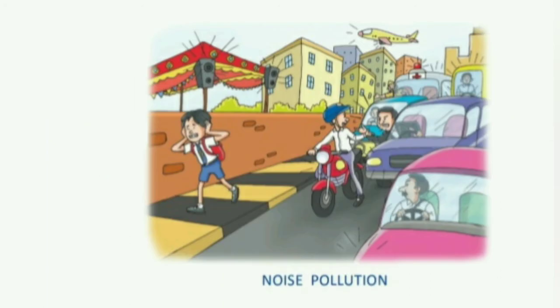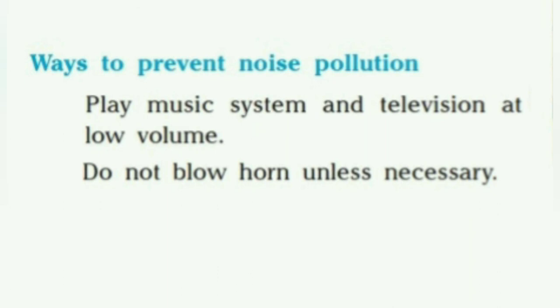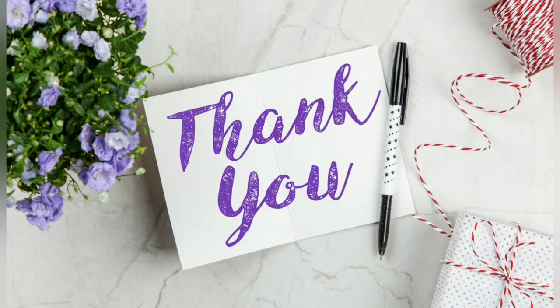Next is noise pollution. Loud and unpleasant sound is called noise. The noise from automobiles, aeroplanes, and factories causes discomfort to people and results in noise pollution. To prevent noise pollution, we can play music systems and televisions at low volume. We should not blow the horn unless it's necessary. So these are the different types of pollution. Thank you.